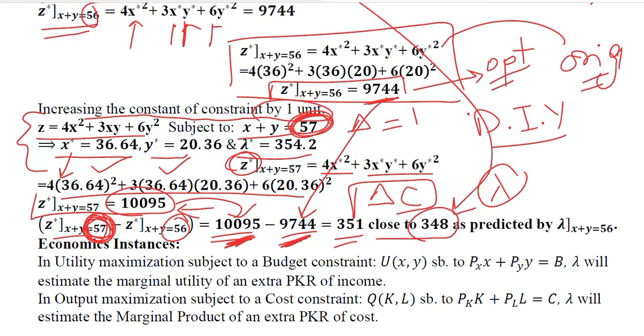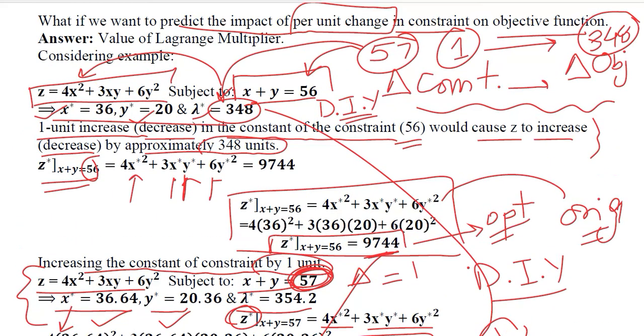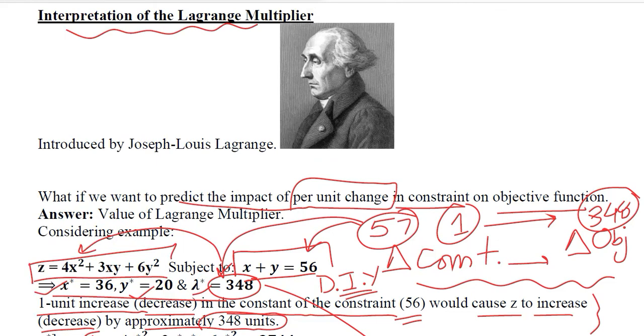Some economic instances that we might confront in our economic analysis would be that we do the utility maximization subject to budget constraint. This is the utility function, this is the budget constraint and lambda will estimate the marginal utility of an extra PKR or dollars of the income. So lambda is going to tell us that if we change this budget by one unit, what will be the level of the utility? How much it will change? And in case of output maximization, we can see that if one unit change happens in the constraint, what will be the change in the objective function of output? So this is what we get if we calculate the value of lambda by applying the Lagrangian multiplier method in case of an economic situation or any mathematical situation. So this was the interpretation of Lagrangian multiplier method both in mathematical situation as well as in the economic situation.